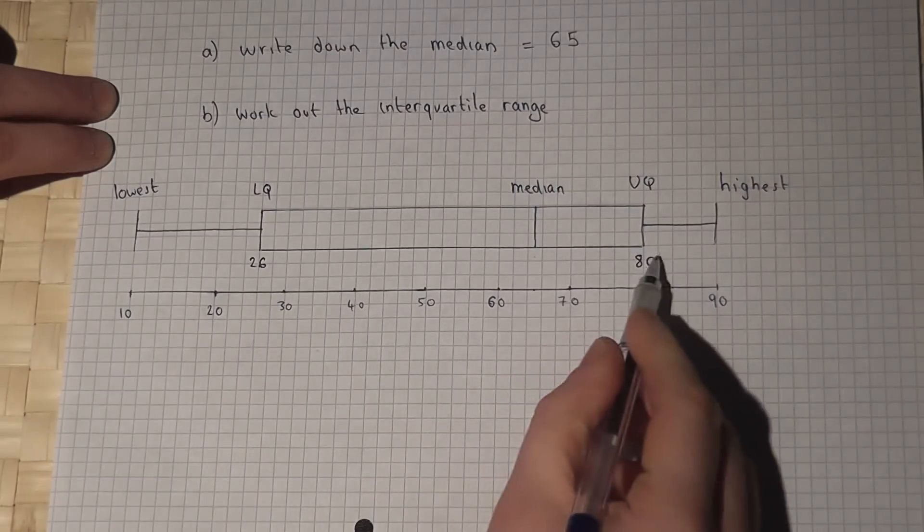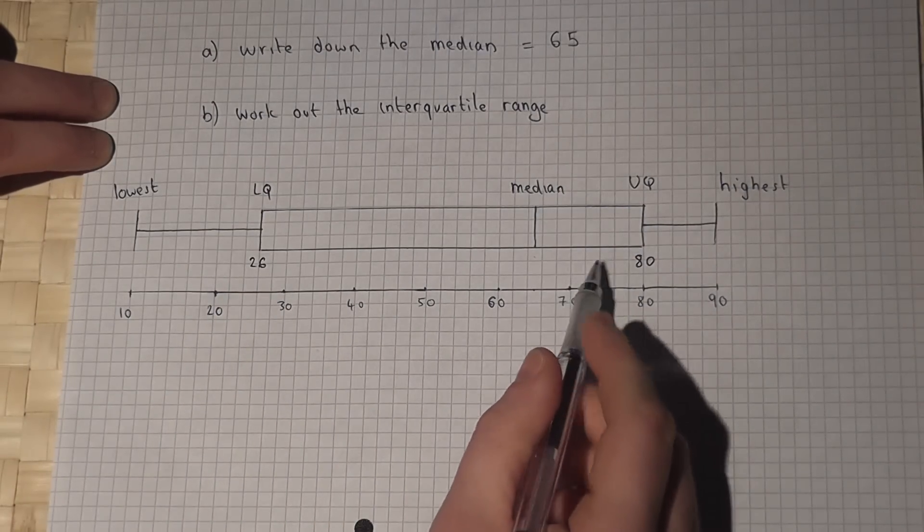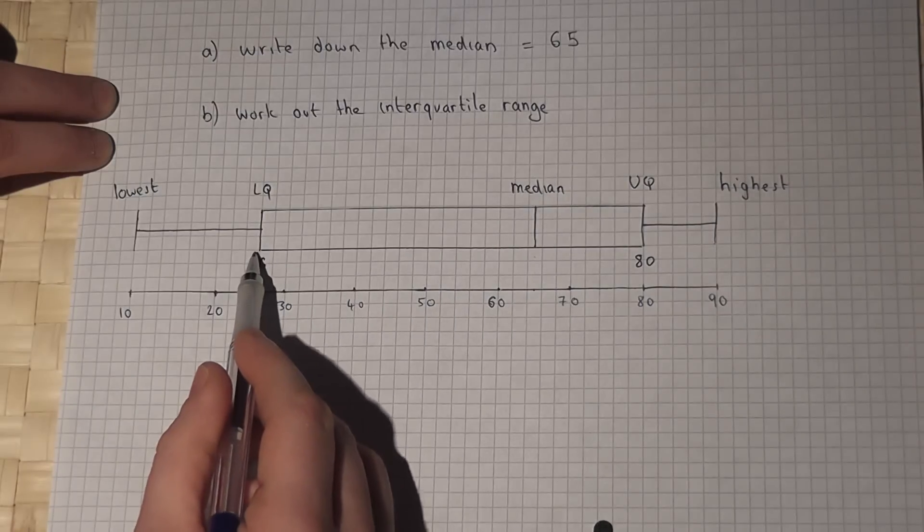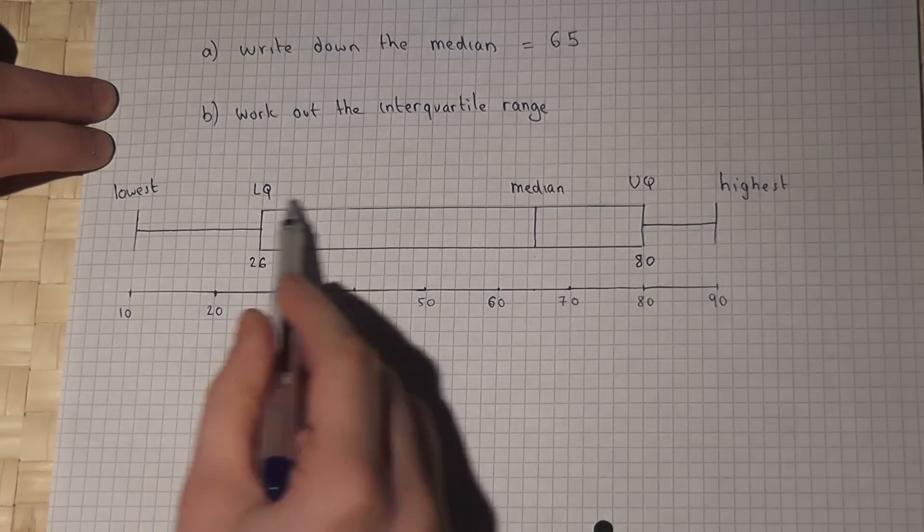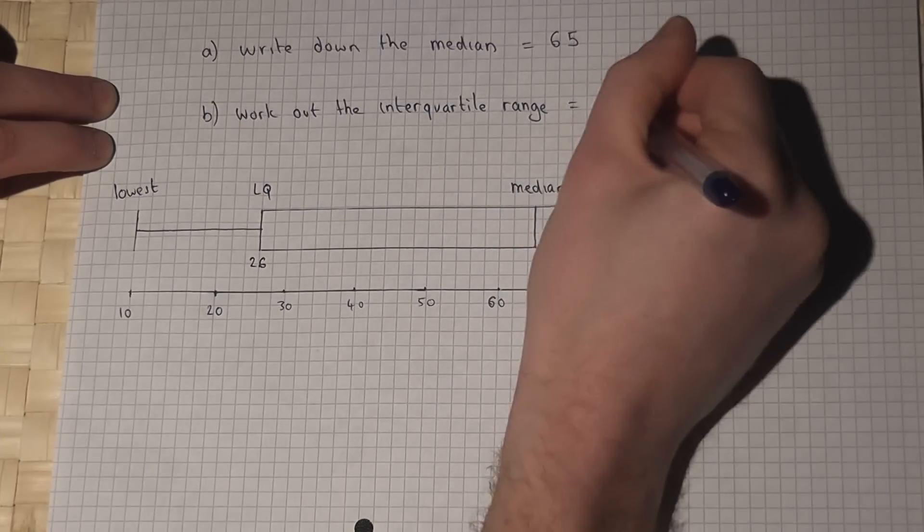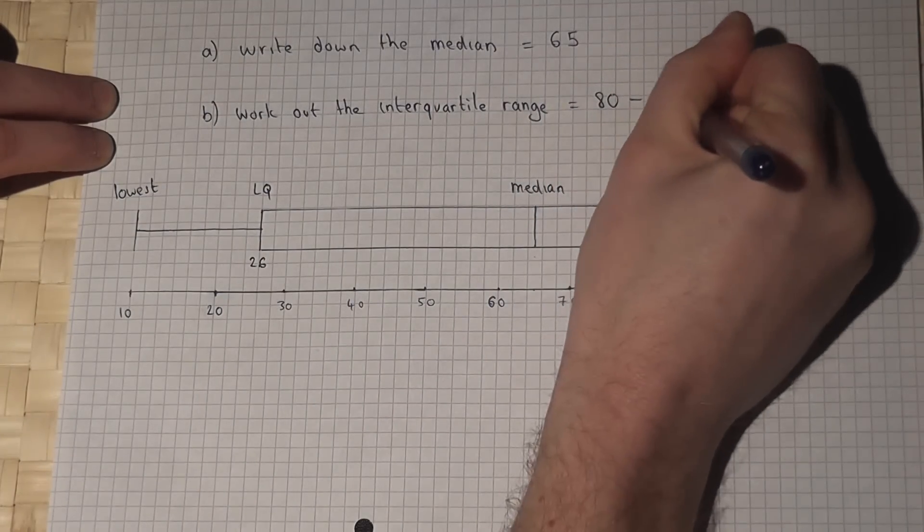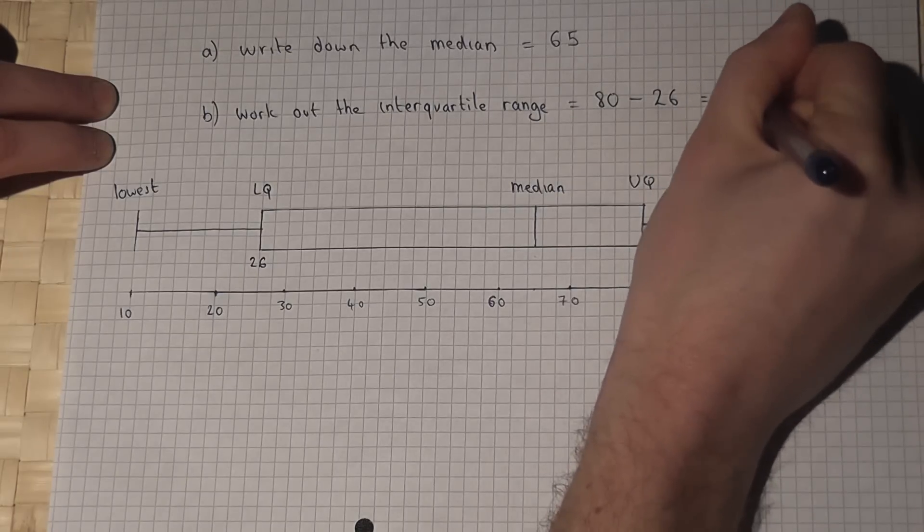And this represents the middle 50% of people or whatever the survey is on. The interquartile range is merely the distance between the lower quartile and the upper quartile. So in this case it is 80 take away 26, which is 54.